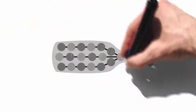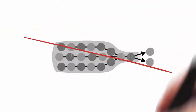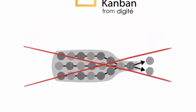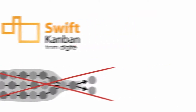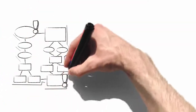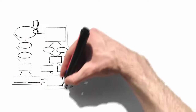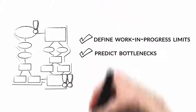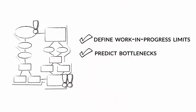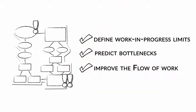Eliminate bottlenecks and drastically improve your team's productivity with Swift Kanban. Swift Kanban helps you visualize your workflow, allowing you to prioritize tasks, define work in progress limits, predict bottlenecks, and improve the flow of work through your system.